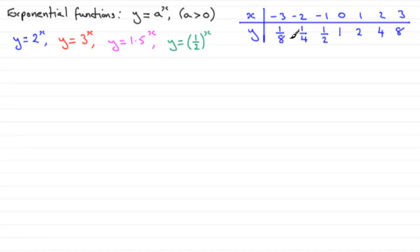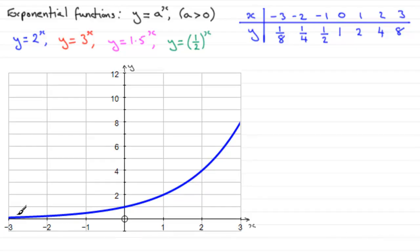If you plot these values, the graph of y equals 2 to the power x passes through 1 on the y-axis. It gradually approaches the x-axis as x becomes more negative but never actually crosses it. The x-axis is called an asymptote.